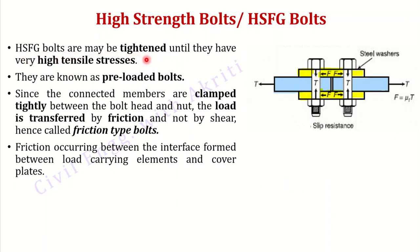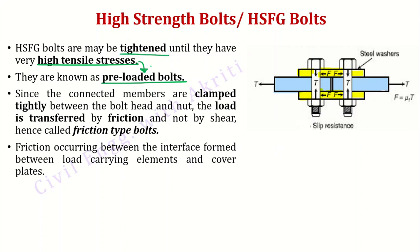High strength friction grip bolts may be tightened until they have very high tensile stresses, shown here as T. Since the connected members are clamped tightly between the bolt head and nut, the load is transferred by friction and not by shear. Hence they are called friction type bolts.